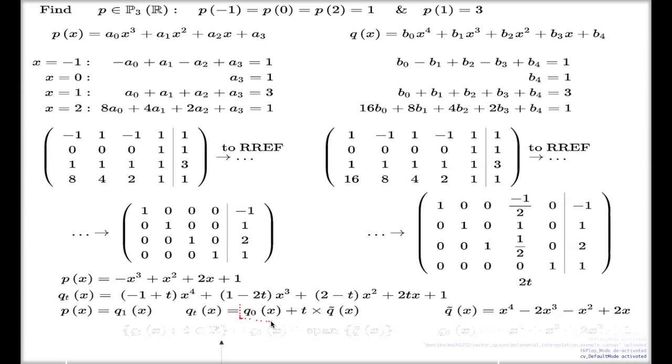Or if I use my vector language term, vector space language, I can say that the family of these solutions Q sub T, where T runs across real numbers, for every real T there will be a solution. It's simply my Q₀ polynomial plus the span of Q̃ polynomial.